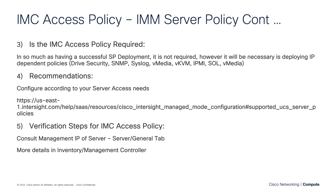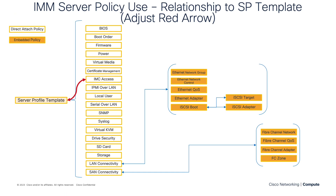Verification is pretty easy — you can go right in the UI and go to the server and look at the General tab to see the IP address assigned to the server. For more details like the VLAN, you can go to Inventory Management Controller to find those details. As with all IMM Expert Series videos, I like to include a graphic about the policy and how it relates to the server profile template or server profile. As you can see on the screen, it is a direct attach policy. There are no embedded policies, but there is an embedded pool — you need an IP pool. You're going to want to configure an IP pool correctly, whether that's in-band or out-of-band, IPv4 or IPv6, so that you can access that pool with the IMC Access policy.